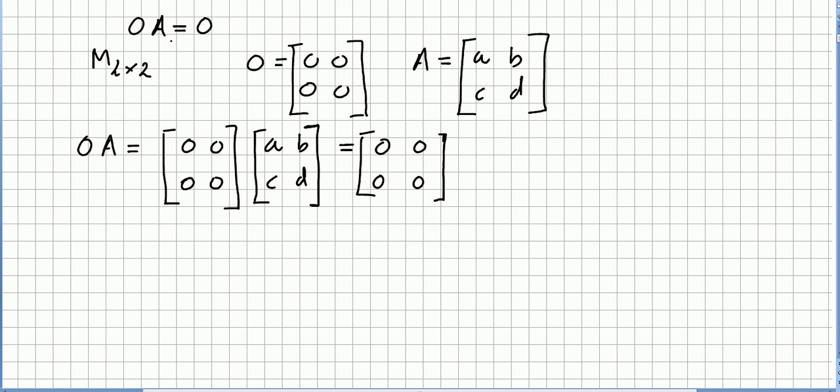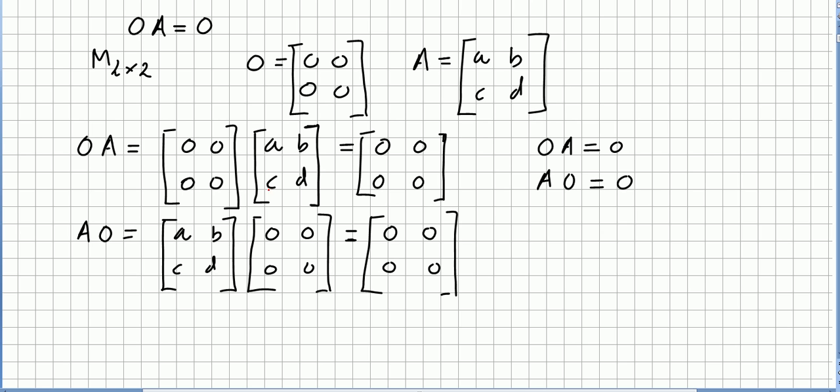Matrix 0 times A equals 0. So what about A times 0? Well it is the same right, that will be matrix a, b, c, d times 0 0 0 0. First row times first column that will be 0, this one times this one 0, this one times this one 0 and this one will be 0. So 0 times A is 0 and A times 0 is also 0.